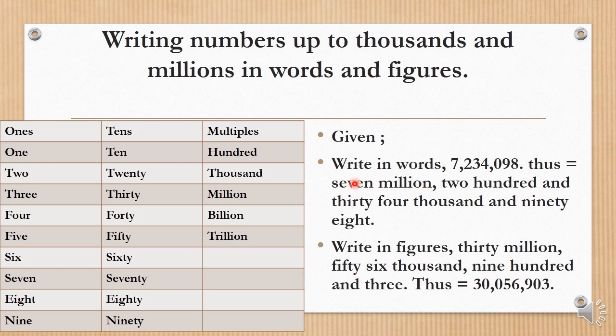So we spell: seven million, two hundred and thirty four thousand, and ninety eight.